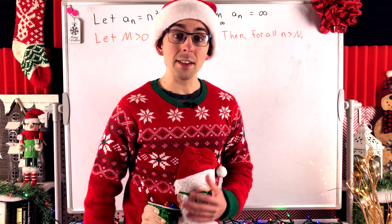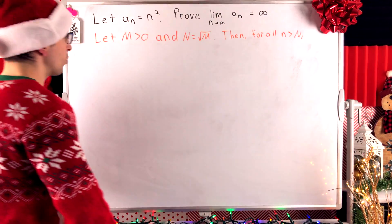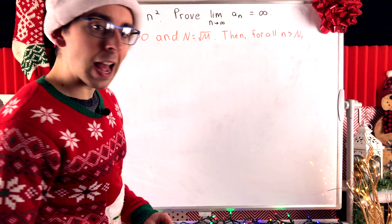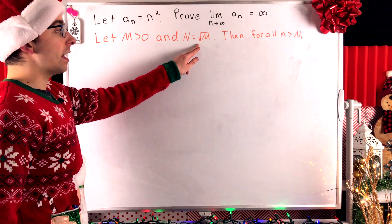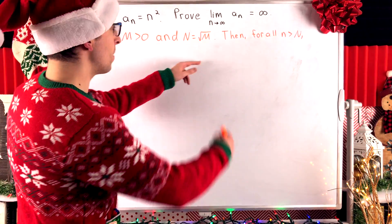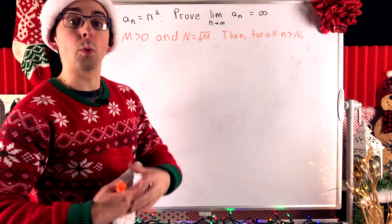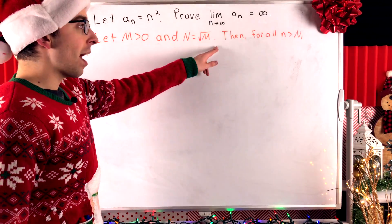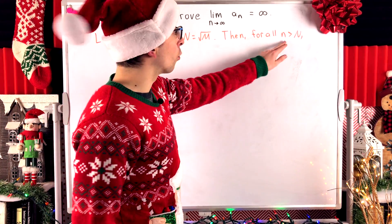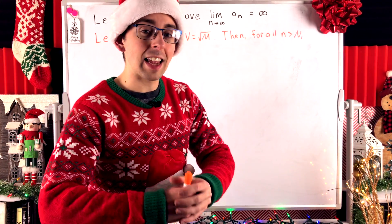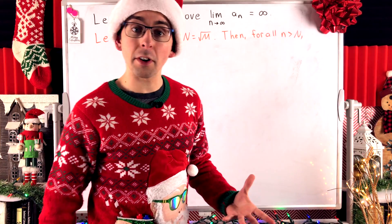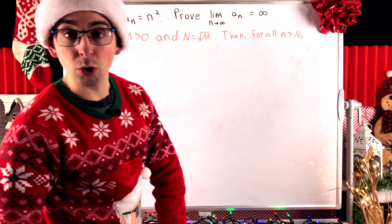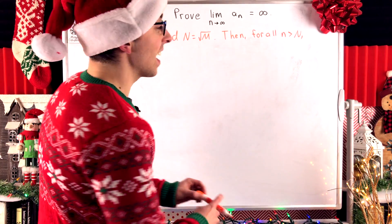All right, the rest is a piece of cake. Here's how our divergence proof goes. We say: fix this positive number m, and let big N equal the square root of m. This is what we figured out would work in our scratch work. Then for all n greater than big N — that is, consider the nth term of our sequence for all values of n that are bigger than the square root of m.